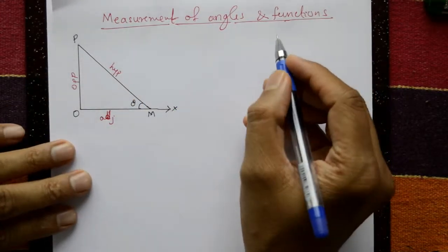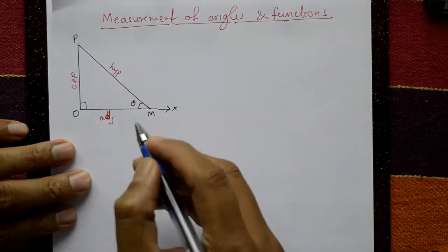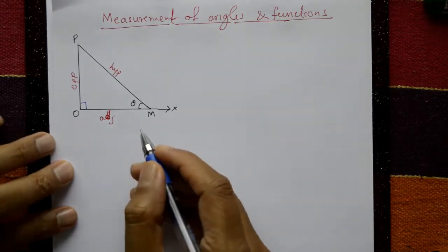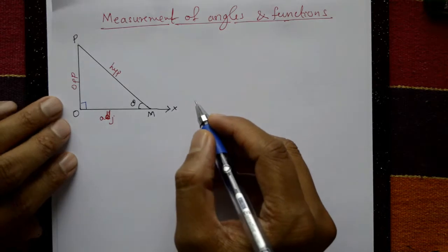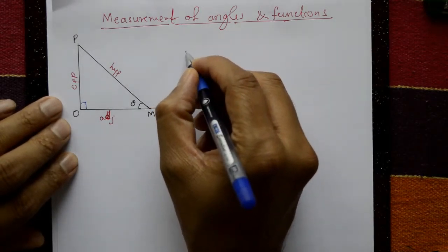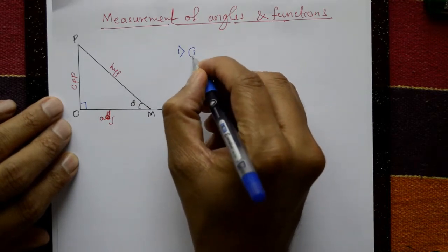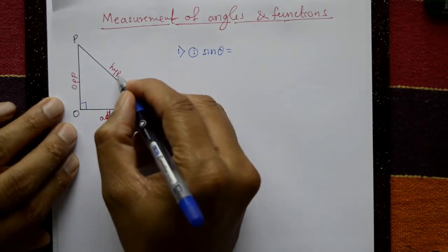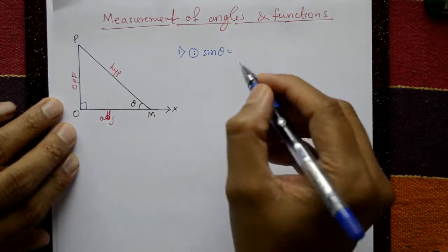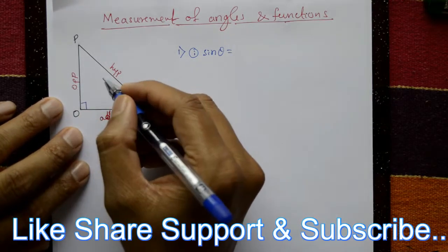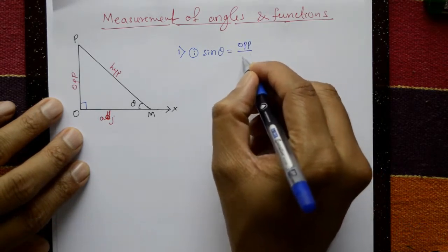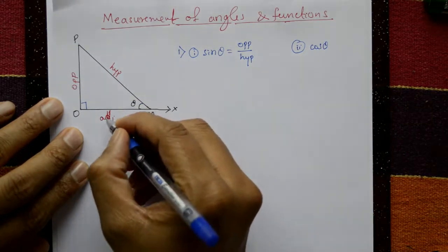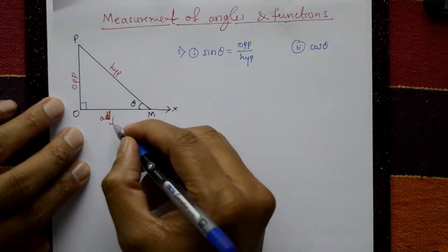Measurement of angles and functions. This is a right angle triangle — this is hypotenuse, opposite, and adjacent side. Sin theta: sin theta is opposite upon hypotenuse. Second one is cos theta: cos theta is adjacent side upon hypotenuse.